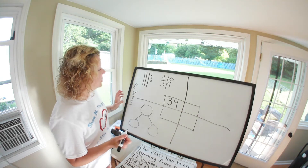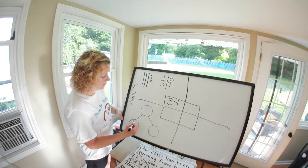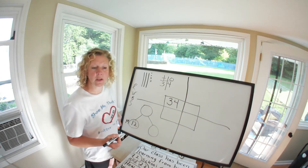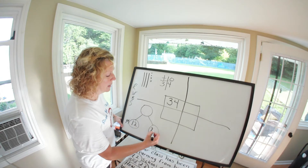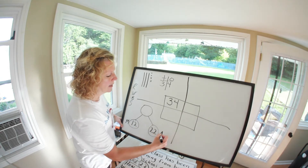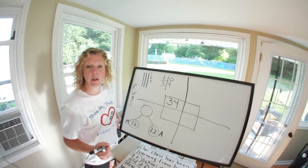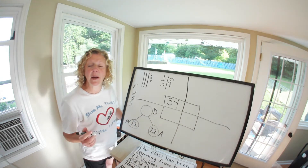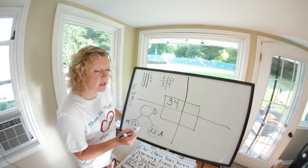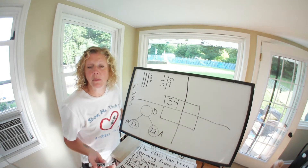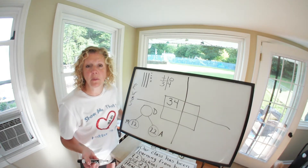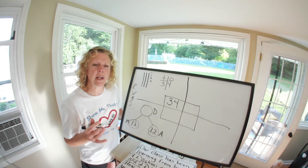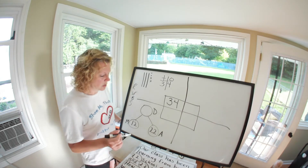Now we're going to fill in our number bond. We had 12 — that was in March, so we'll label that 'March.' Then we have 22, and we'll label that 'A' for April. So now we need to know how many days total we had altogether. We could punch 12 and count up 22, or punch 22 and count up 12, but that would be quite a lot.